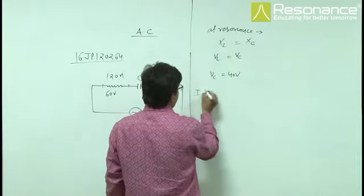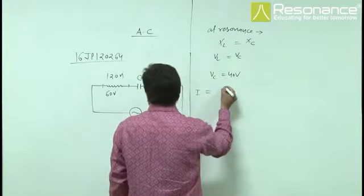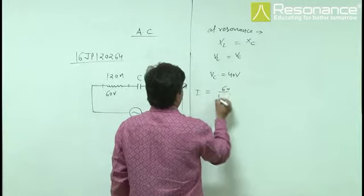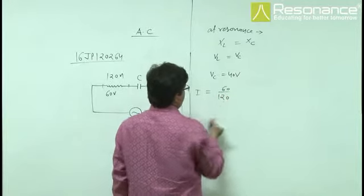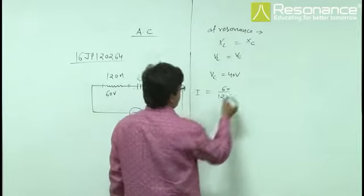Current in this condition I equals 60 by 120 because the impedance is equal to resistance. At resonance it is 1 by 2.